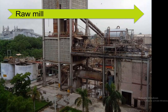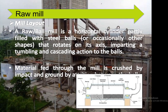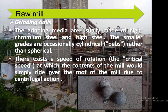The feeder in the raw mill is a ferris wheel driven by a variable DC drive. There are three hoppers in the raw mill building: one for limestone received from the yard after proper blending, a second for high-grade limestone used to improve the limestone content and burn ability of the raw mix. A raw or ball mill is a horizontal cylinder partially filled with steel balls that rotates on its axis, crushing feed material by impact and grinding by attrition between the balls. The grinding media are usually made of high chromium steel.